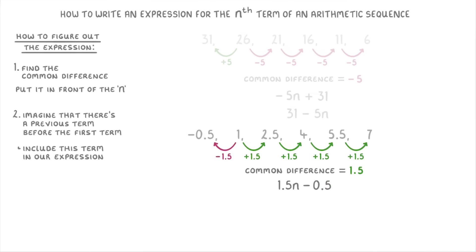Just before we finish, a good trick to double-check if your expression is correct is to try it for one of the terms that you already know. For example, we could try using 1.5n minus 0.5 to find the fifth term in our sequence, which we know should be 7. So we do 1.5 times 5, because n is 5 for the fifth term, and then take away 0.5. So 7.5 minus 0.5, which indeed does give us 7. So we can be pretty confident that our expression is correct.